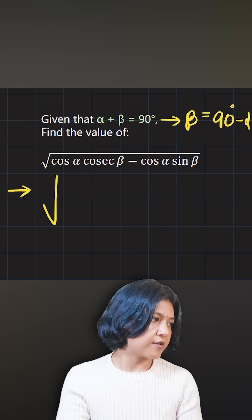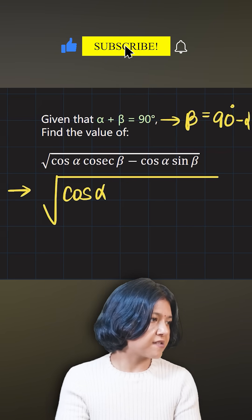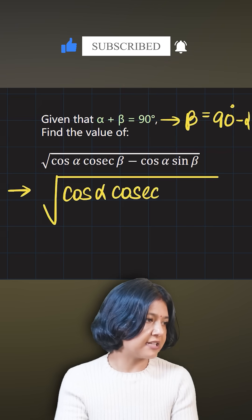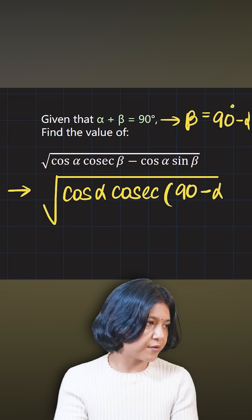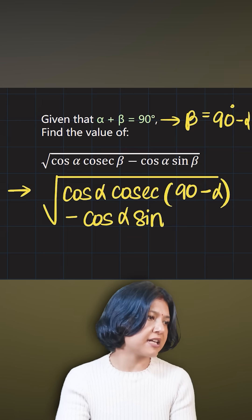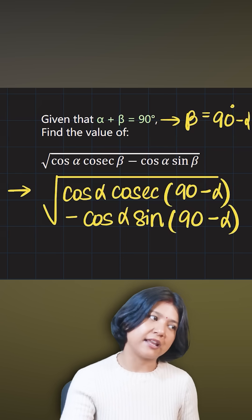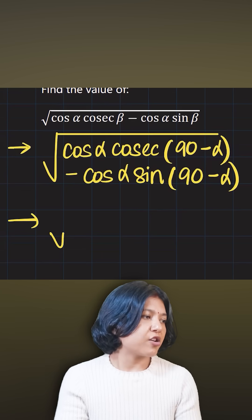I want to keep alpha as alpha. Since I've substituted beta, instead of beta I'm going to write 90 minus alpha. Now use the property of complementary angles. Instead of beta, I'm writing sin(90 - alpha). Cosec(90 - alpha) is the same as sec alpha. Cosec and sec have a complementary relationship.